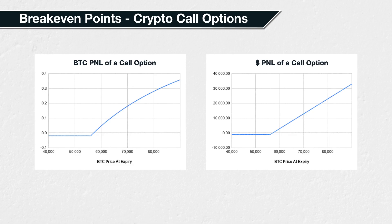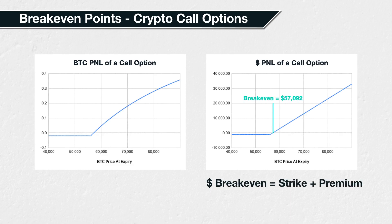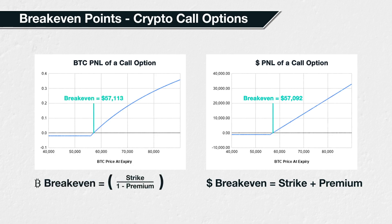For call options that use dollars as collateral, the breakeven point is simply the strike price plus the premium paid. For cryptocurrency call options, though, we need to use the following formula: the strike price divided by one minus the premium. This time it is a premium amount in Bitcoin per contract that we use in the calculation, not the dollar value.